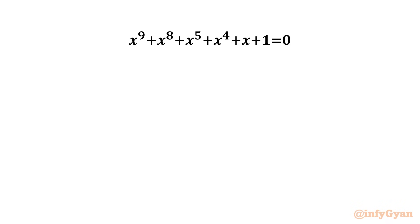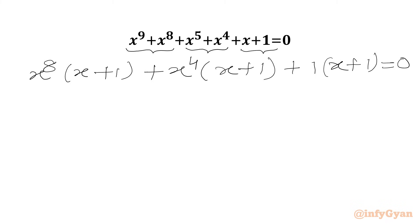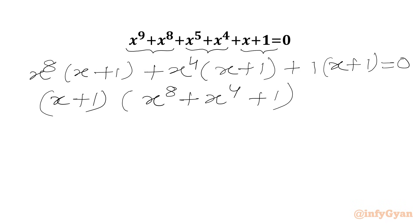Let us get started by taking x power 8 common from the first two terms, x power 4 common from the next two, and 1 common from the last two. We get x power 8 times (x plus 1) plus x power 4 times (x plus 1) plus 1 times (x plus 1) equal to 0. Now x plus 1 is overall common, so in the bracket we get x power 8 plus x power 4 plus 1, equal to 0.